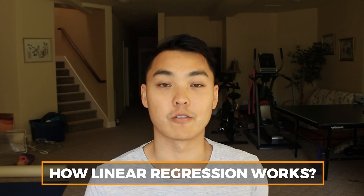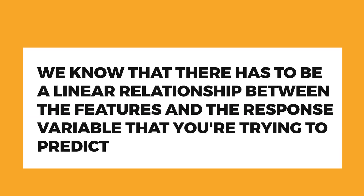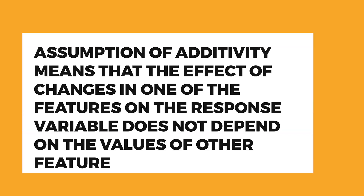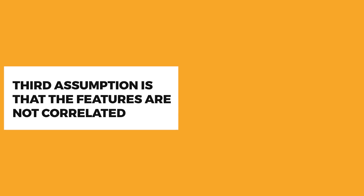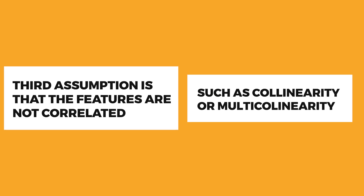For this kind of question, you need to know the workings of linear regression. The answer is: first, there must be a linear relationship between the features and the response variable. Second, the assumption of additivity means the effect of changes in one feature on the response variable does not depend on the values of other features. Third, the features must not be correlated — avoiding collinearity or multi-collinearity.